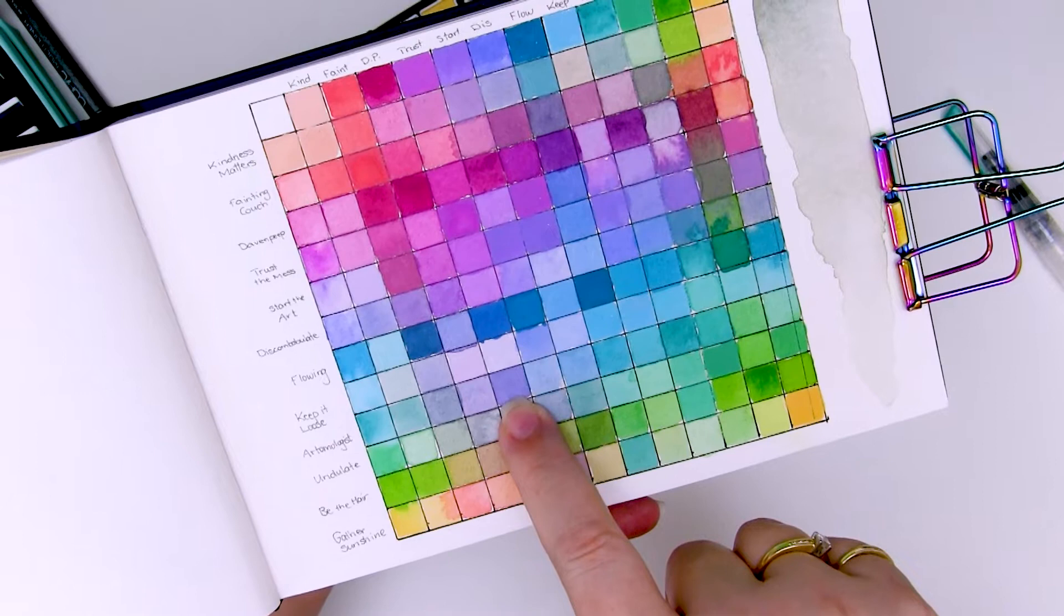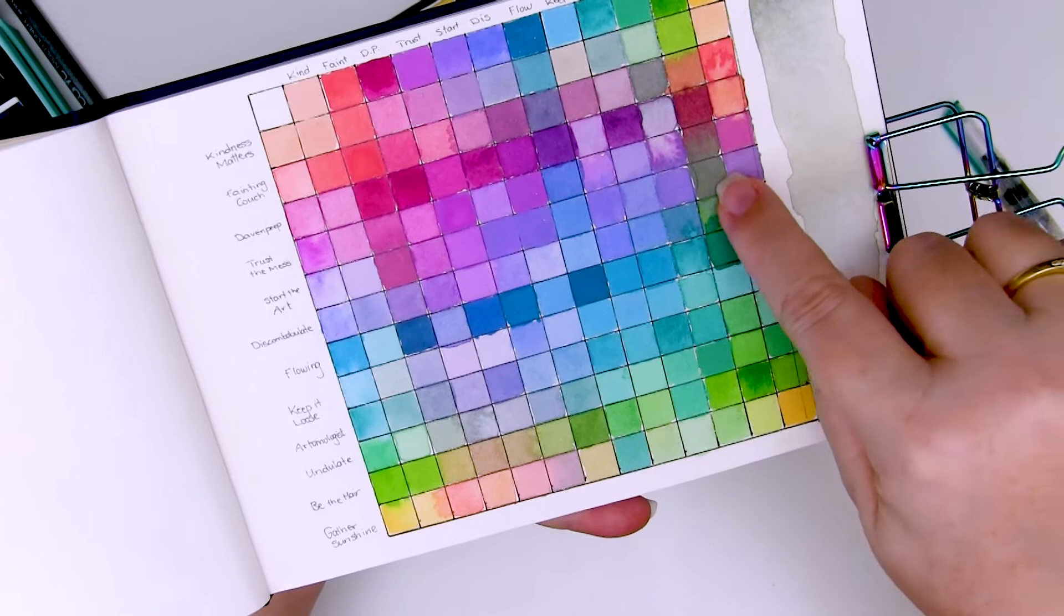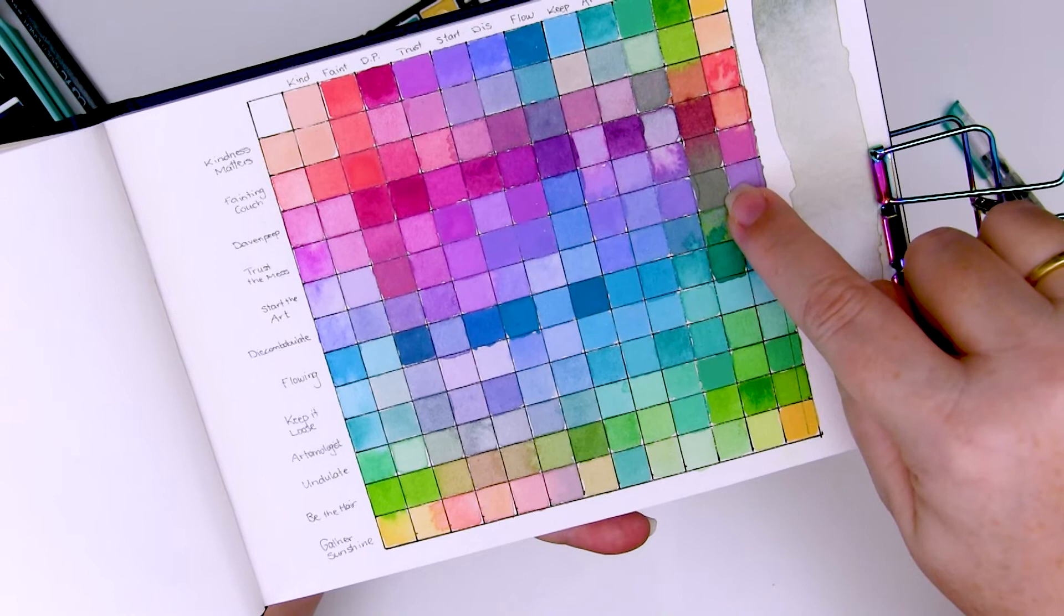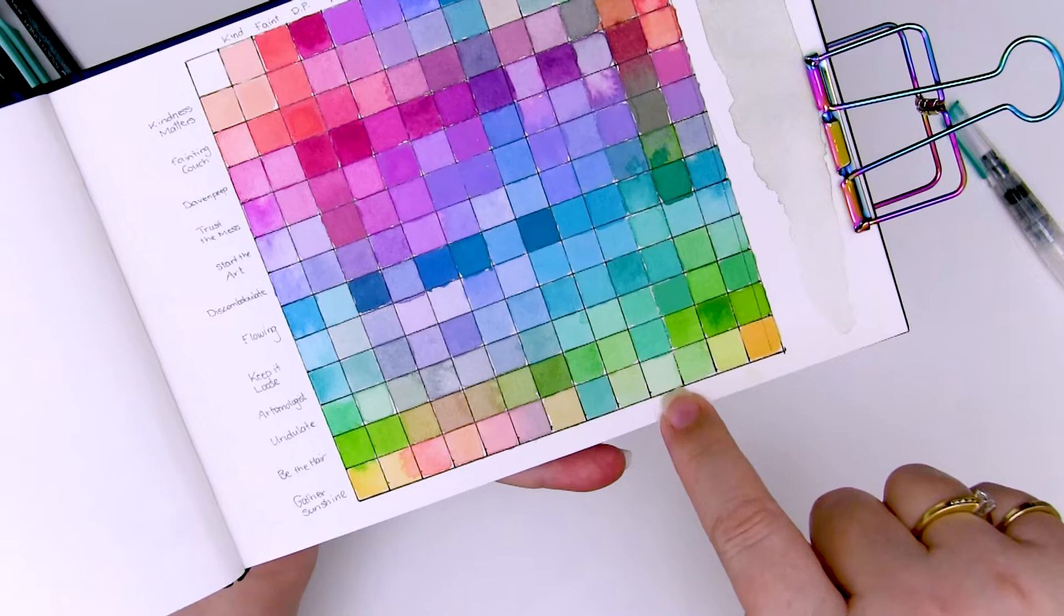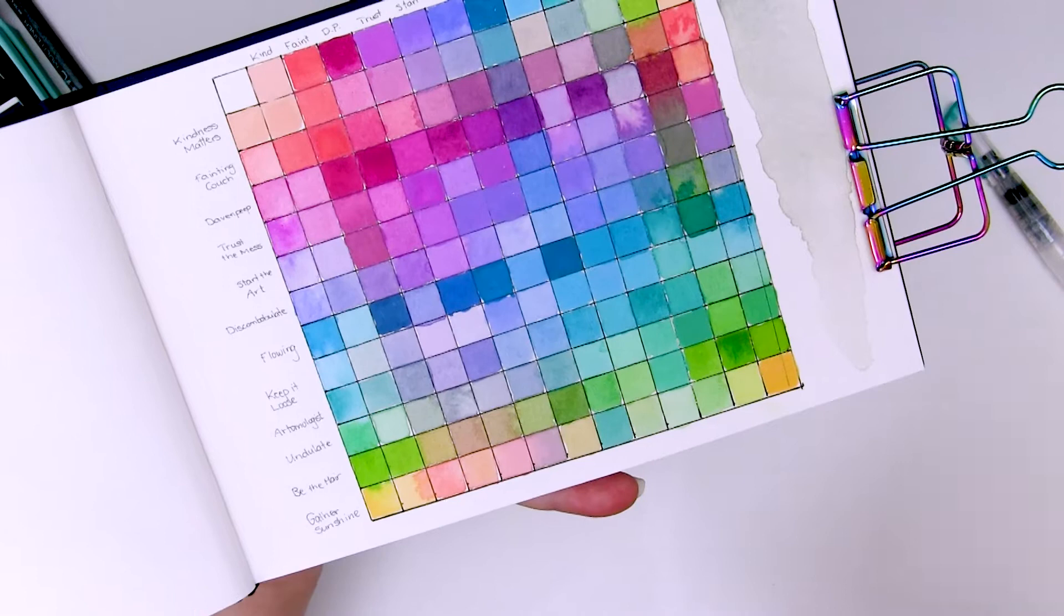So if I mix that gorgeous color with perhaps something in the sagey tones for some lavender, I can head over here. See, I've got this wonderful grayish green as a dark color with a mix of Be The Hair and Start the Art, and I can use that, or pop down here where I've mixed Gather Sunshine and Artemologist and get a paler version. And I've got a wonderful lavender color palette.